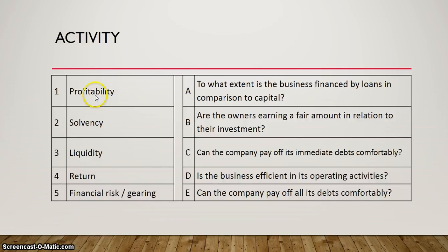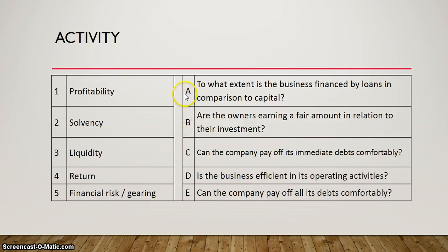Instead of first looking at the concept and then looking at each of the questions, you would first say: to what extent is the business financed by loans in comparison to capital? And then you'd go and see — is it profitability, is it solvency, is it liquidity, is it return? I'm sure you've got the answer now. Number five would be A: to what extent is the business financed by loans. Go through each of those and then I will reveal the answer.